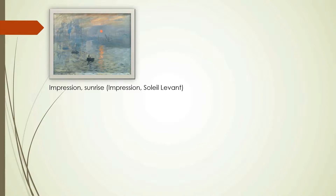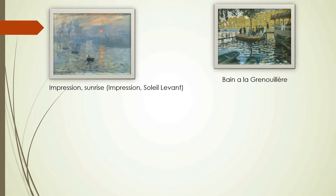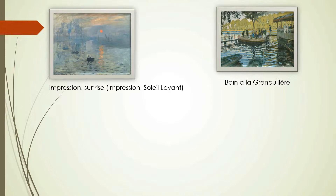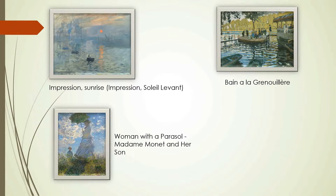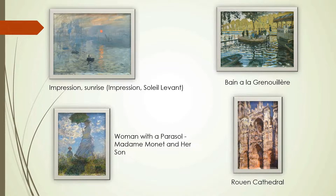It was organized by Monet and his associates as an alternative to the Salon. Among Claude Monet's famous paintings, the first is 'Impression of the Sunrise,' painted in 1872, oil on canvas. The subject is Le Havre.